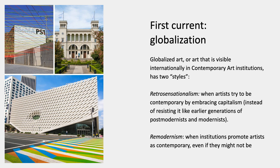Terry Smith's first current is globalization — that is, art that's visible internationally in contemporary art institutions. He divides the stream of globalization in contemporary art into two styles. The first one he calls retro-sensationalism: that's when artists try to be contemporary by embracing capitalism instead of resisting it, like earlier generations of postmodernists and modernists. The second one he calls re-modernism: that's when institutions promote artists as contemporary, even if they might not be.